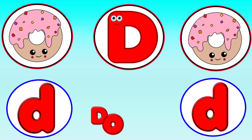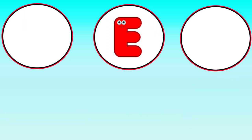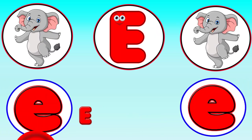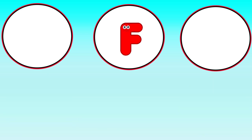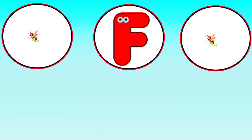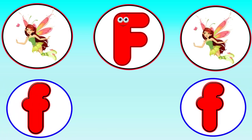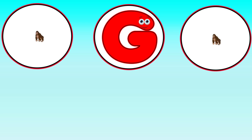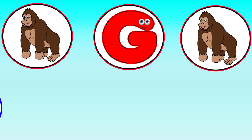D is for Donut. Da, Da, Donut. E is for Elephant. A, A, Elephant. F is for Fairy. Fa, Fa, Fairy.